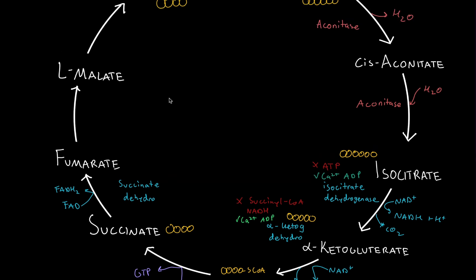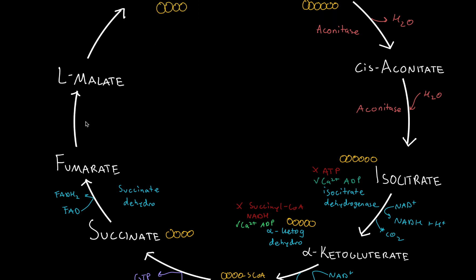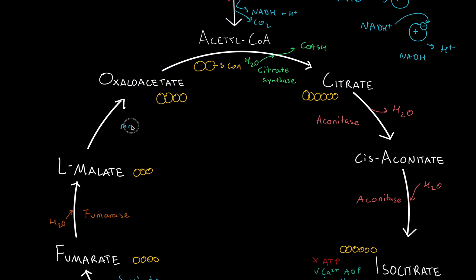To go from fumarate to malate, we need fumarase, and we need an input of water to create malate — still four carbons. Then to go from malate to oxaloacetate, we need malate dehydrogenase, in which NAD+ is converted to NADH and a proton, creating oxaloacetate.